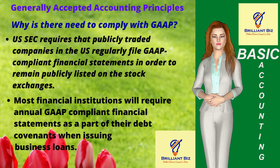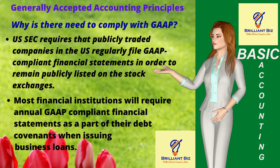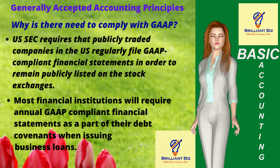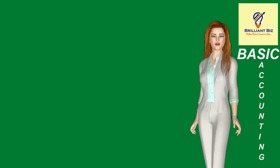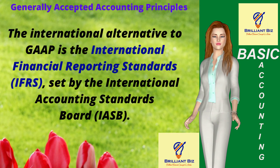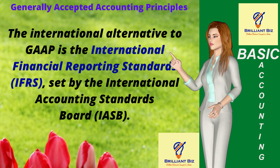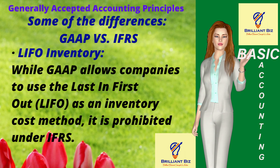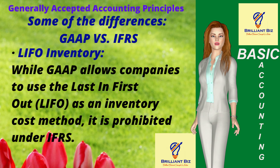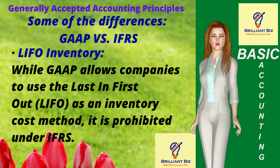GAAP vs. IFRS: GAAP is focused on the accounting and financial reporting of U.S. companies. The Financial Accounting Standards Board, FASB, an independent nonprofit organization, is responsible for establishing these accounting and financial reporting standards. The international alternative to GAAP is the International Financial Reporting Standards, IFRS, set by the International Accounting Standards Board, IASB. The IASB and the FASB have been working on the convergence of IFRS and GAAP since 2002. One difference that still exists: No. 1, Last-in-First-Out Inventory — while GAAP allows companies to use last-in-first-out as an inventory cost method, it is prohibited under IFRS.